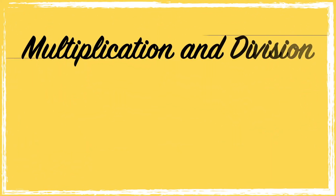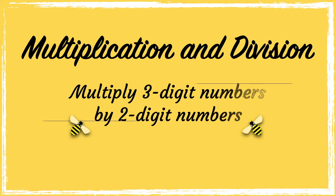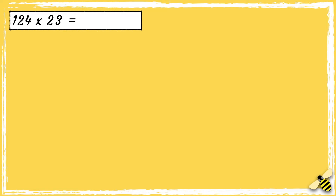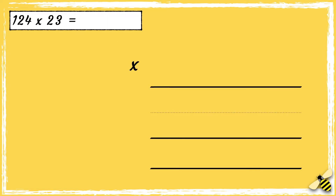In this video we're going to be multiplying three-digit numbers by two-digit numbers. Here is a number sentence: 124 multiplied by 23. It's really important to line the numbers up correctly, so we have the thousands, hundreds, tens, and ones columns. 124 has 1 hundred, 2 tens, and 4 ones. 23 has 2 tens and 3 ones.